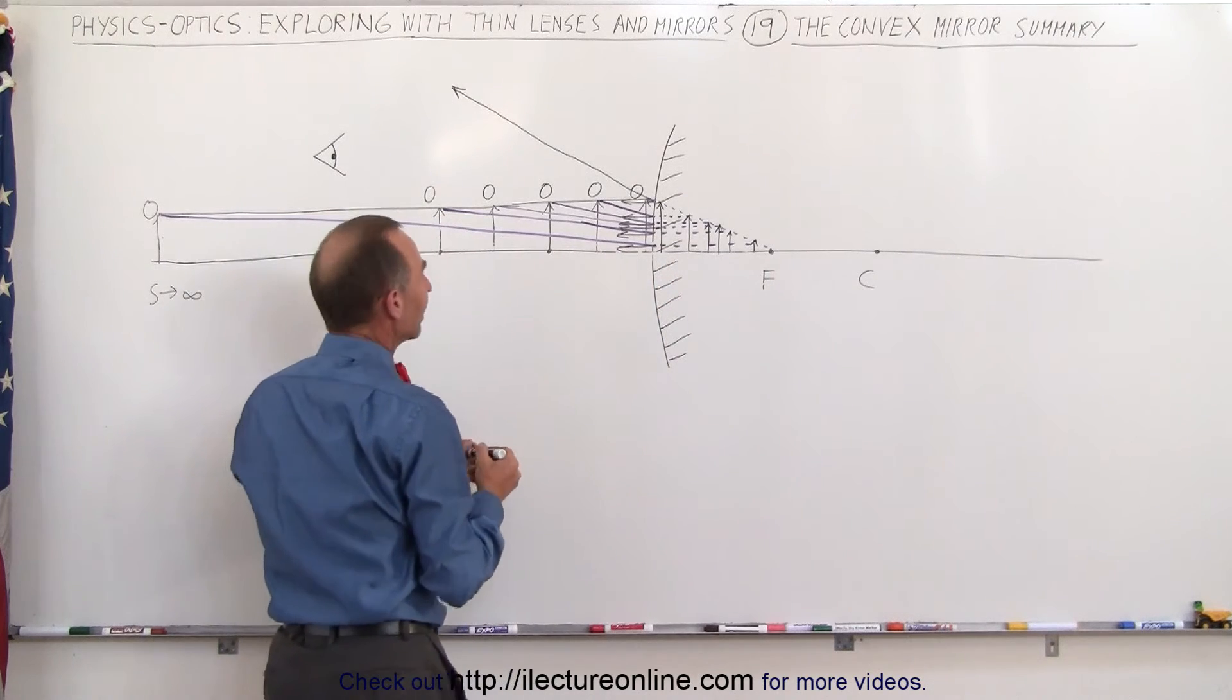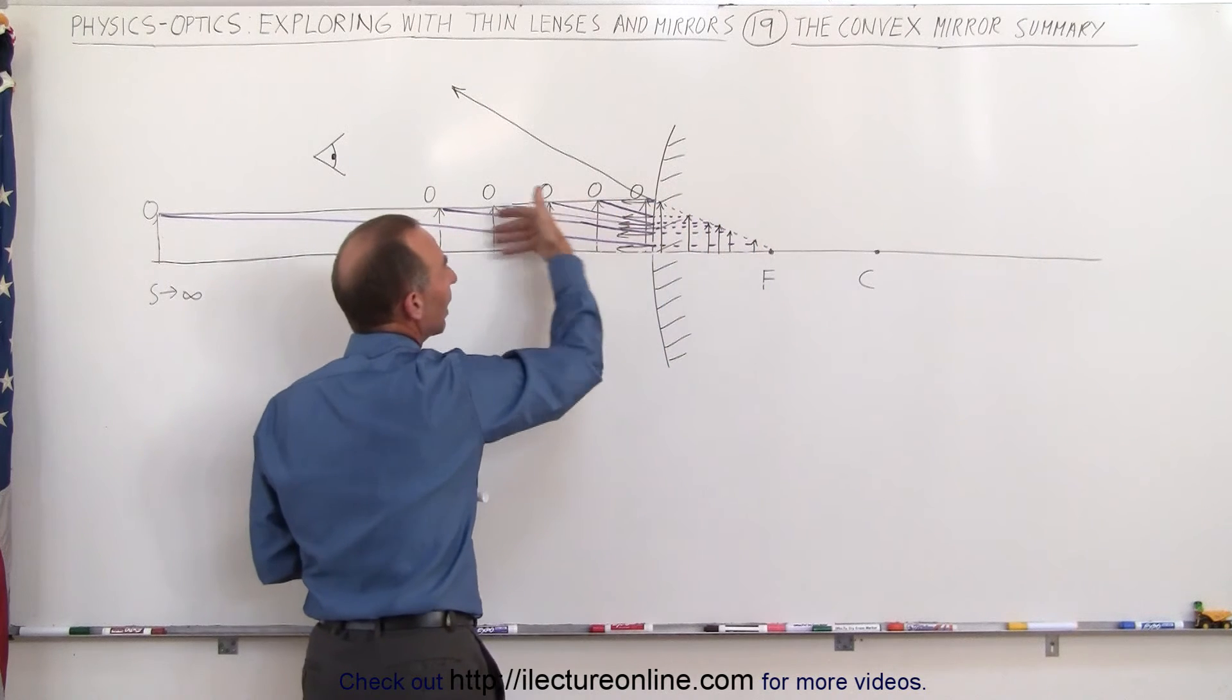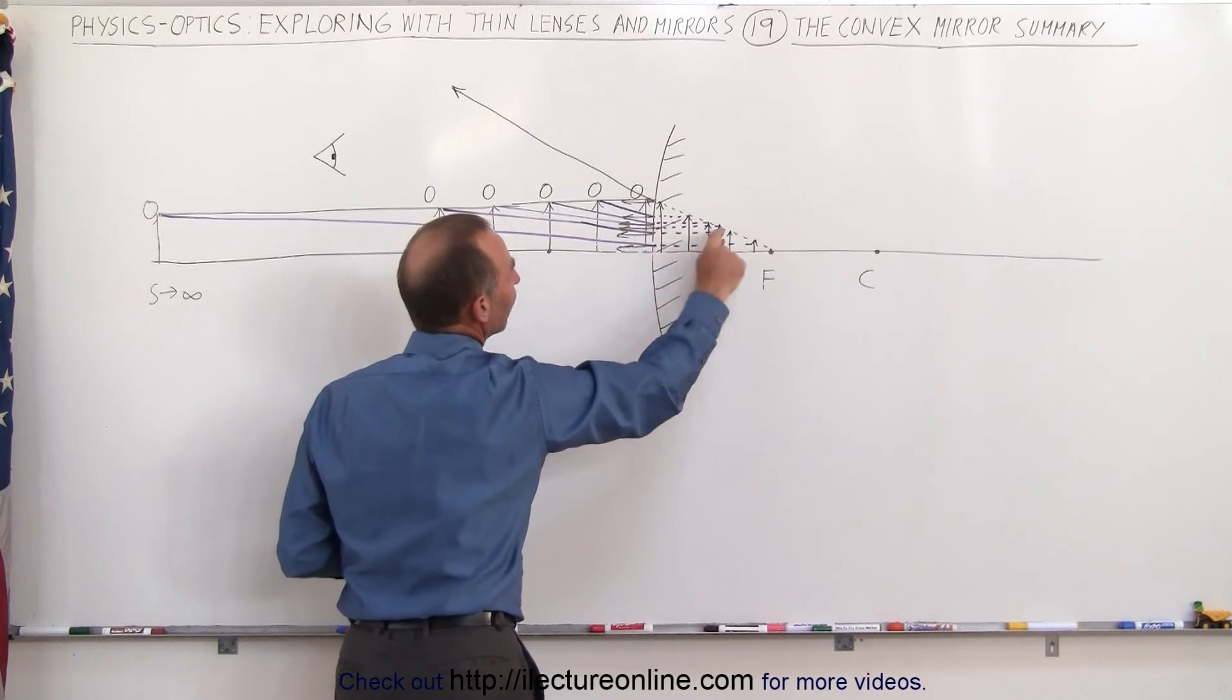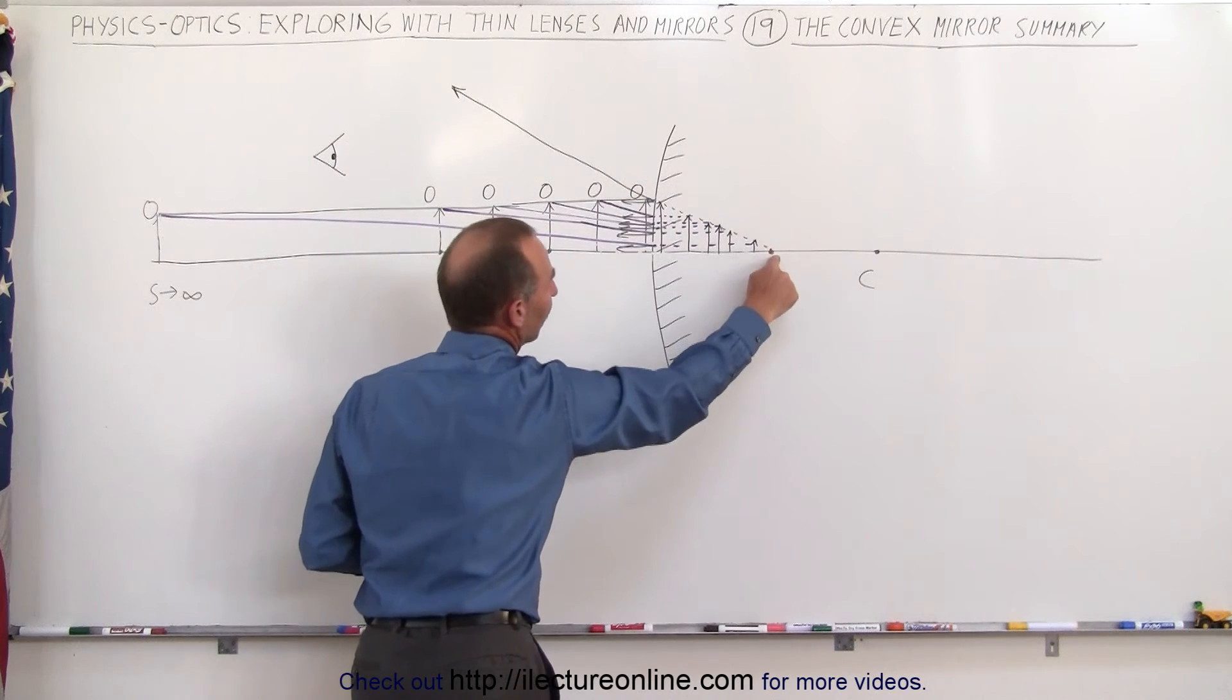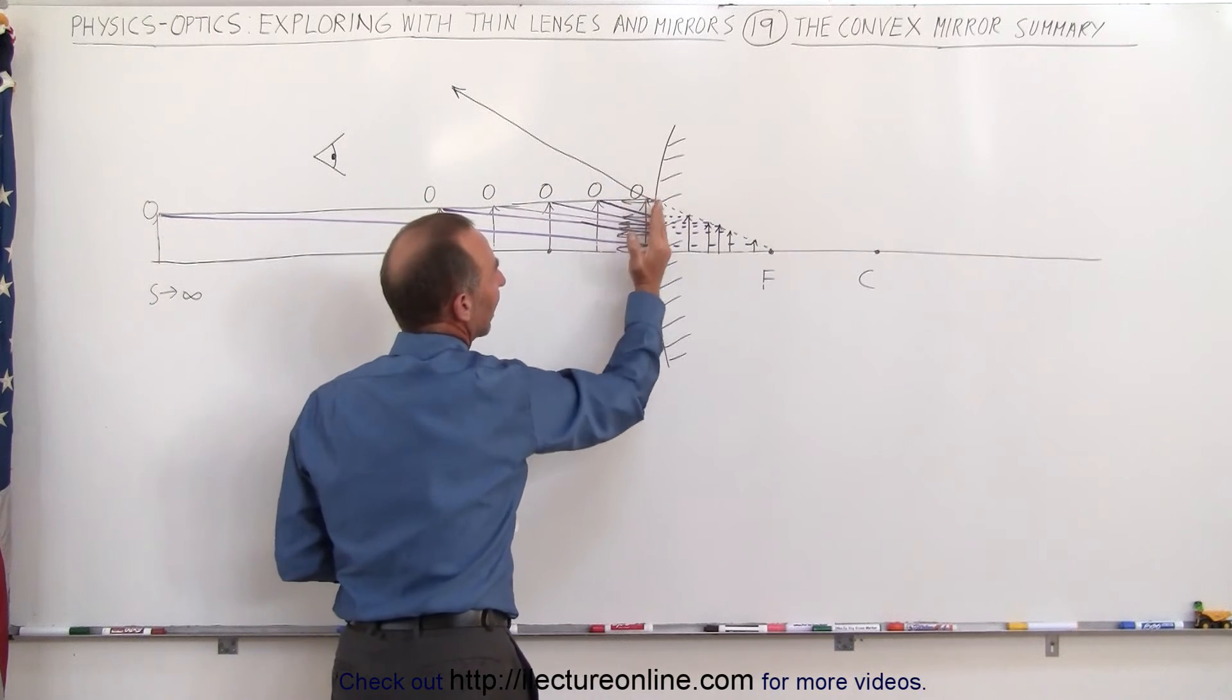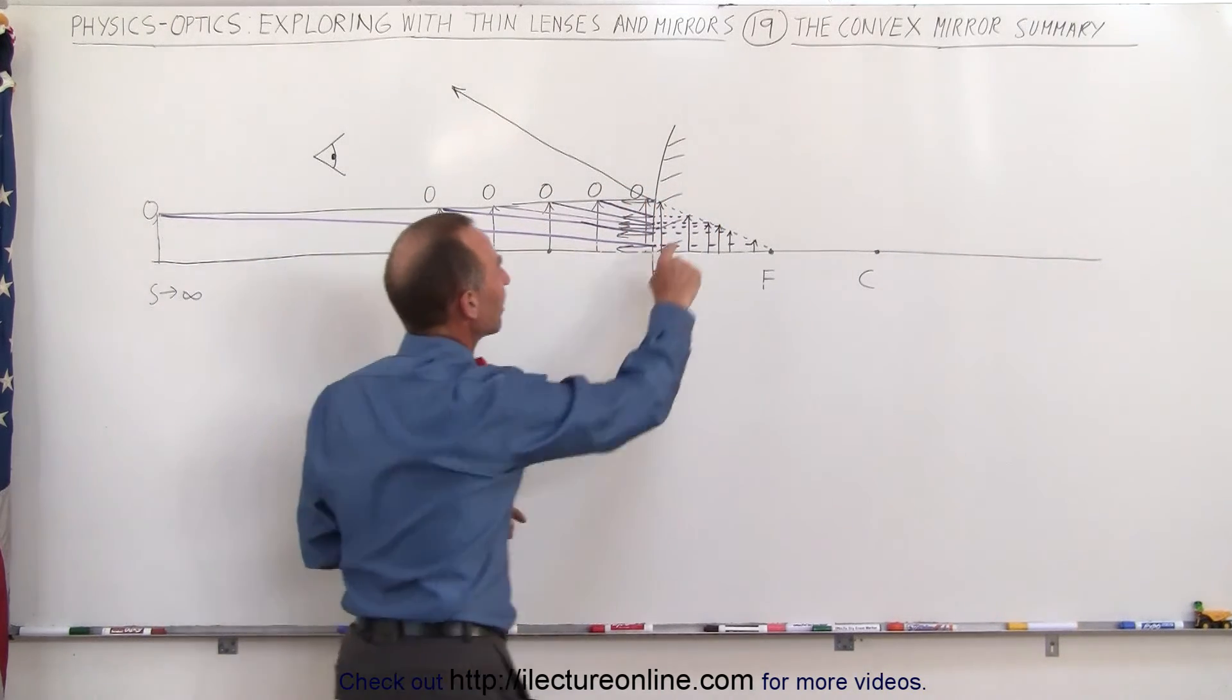And that means that the observer on this side of the mirror will see these rays coming from the mirror and they appear to be coming from behind the mirror, where these lines intersect with the line from the focal point here to the point where the first ray hits the mirror. That's where the image will form, wherever those two lines meet right here.